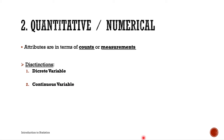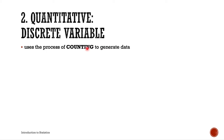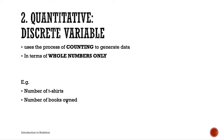Discrete variables use the process of counting to generate data. They are in terms of whole numbers only — no decimals, no fractions — since we are counting. Examples include the number of t-shirts (you can't have half a t-shirt), number of books owned, number of novels, number of children, and number of heads in a family.